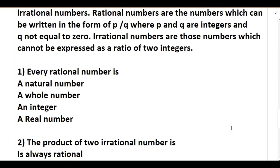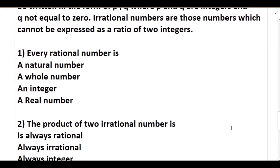First question: every rational number is — the options are: natural number, whole number, an integer, or a real number. From the flow chart we can make out that every rational number is a real number. For example, minus 25 is a rational number — it is not a whole number, it is not a natural number, but all rational numbers come under the family called real numbers.